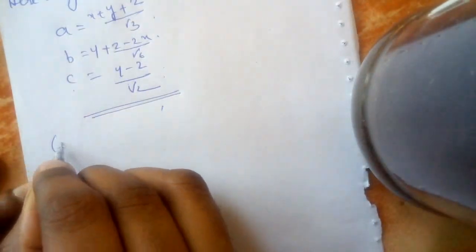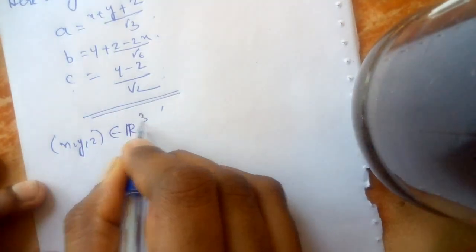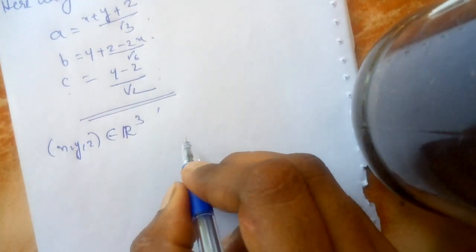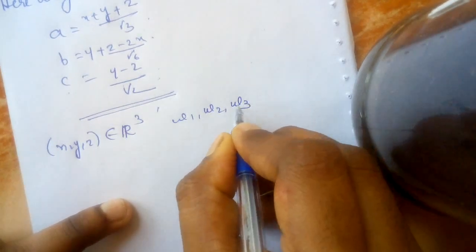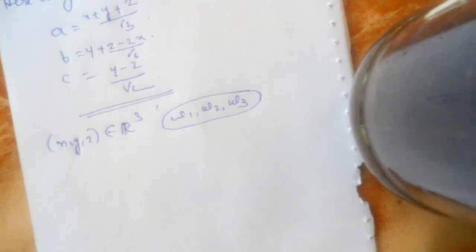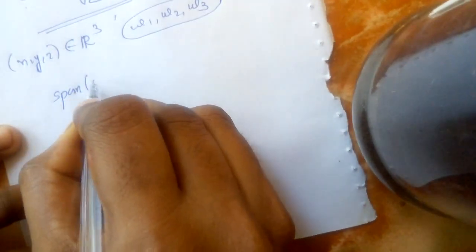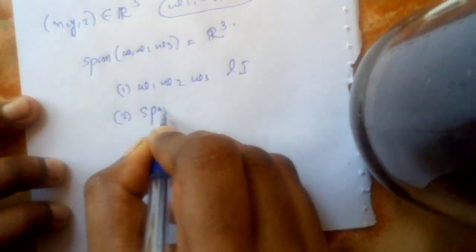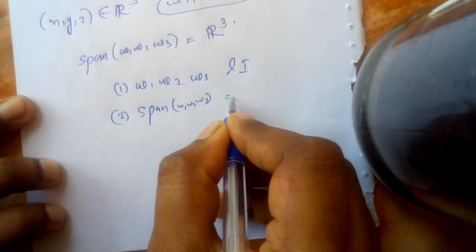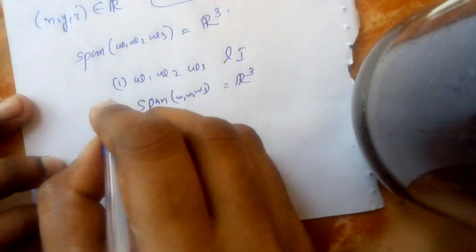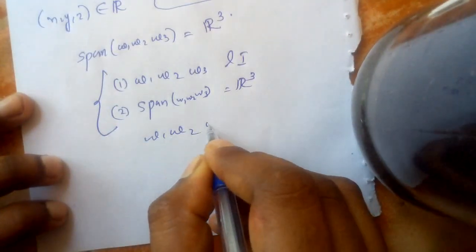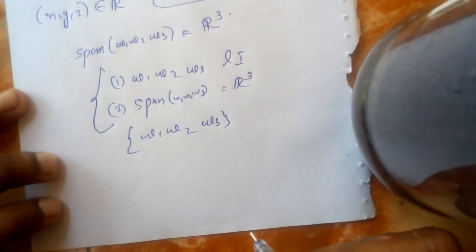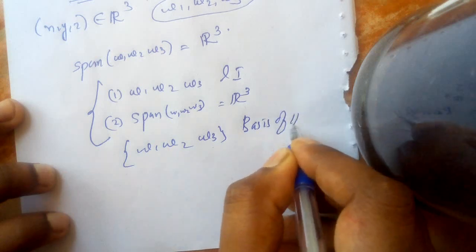We have shown that w1, w2, w3 are linearly independent and the span of these three vectors is R3. Therefore, we can conclude that {w1, w2, w3} is a basis of R3.